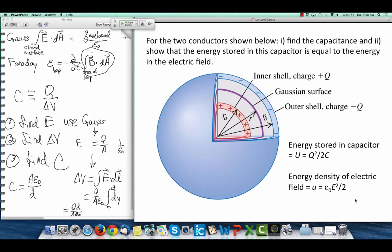Two conductors: an outer shell that's a spherical conductor that's negatively charged, an inner shell that's a spherical conductor that's positively charged.